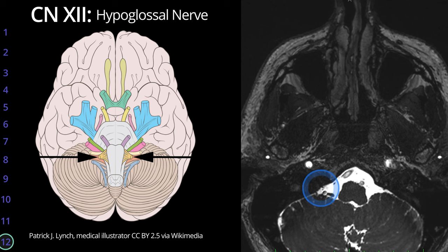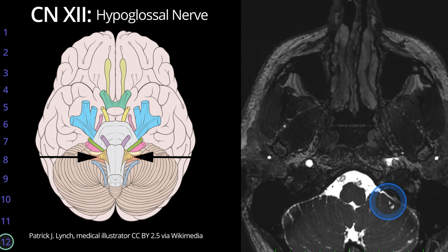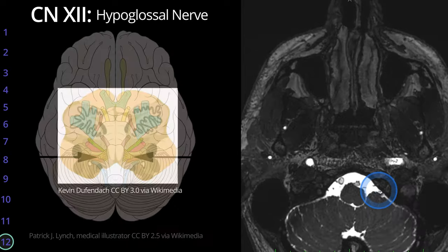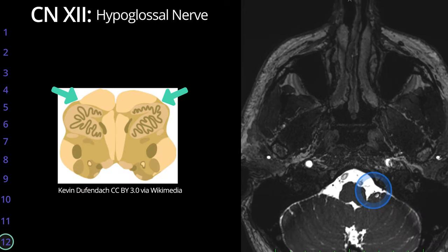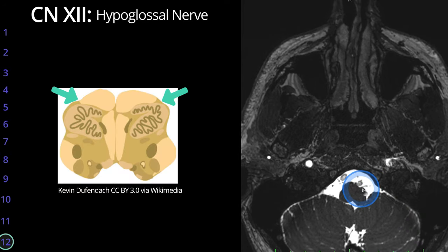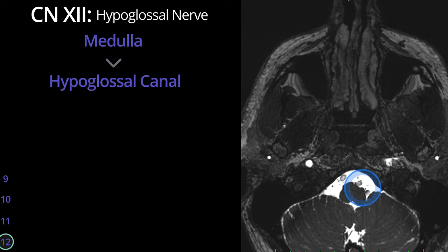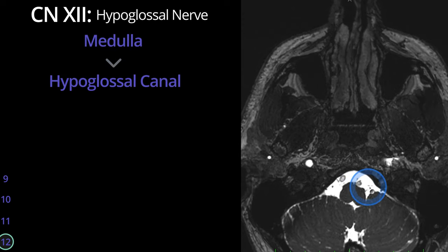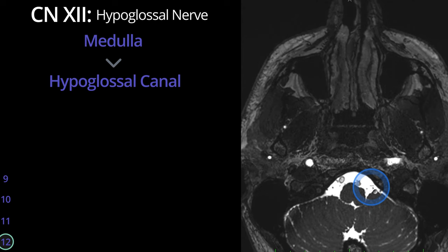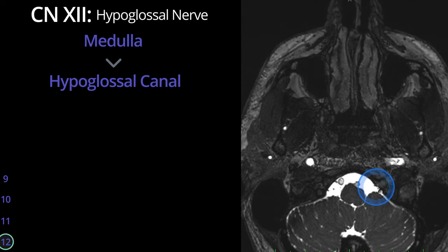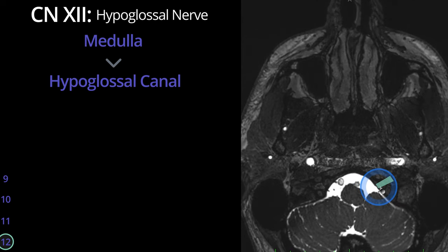The hypoglossal nerve, cranial nerve 12, exits the medulla in the preolivary sulcus, extending laterally to exit the skull base through the hypoglossal canal.